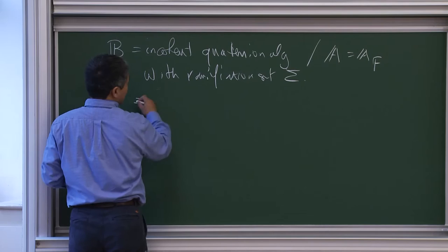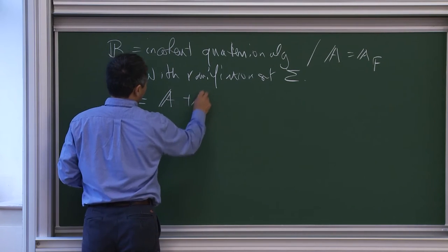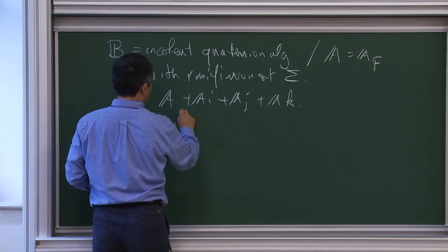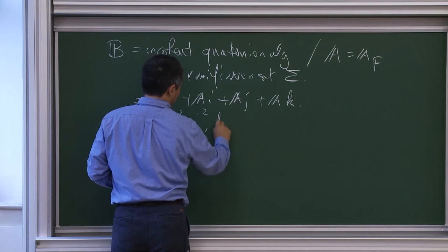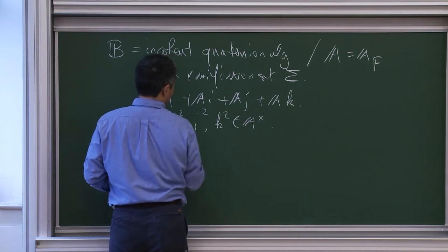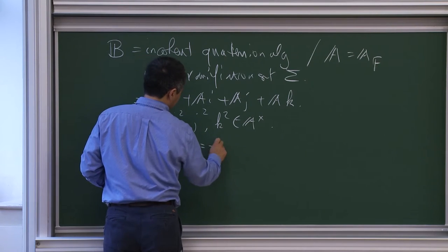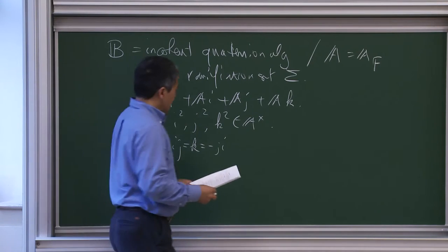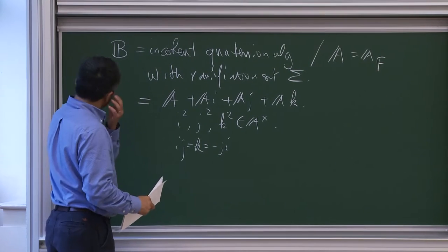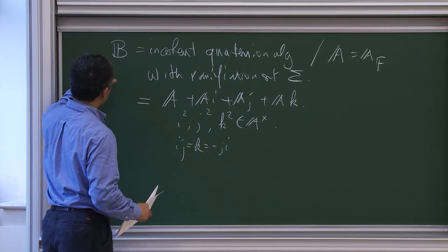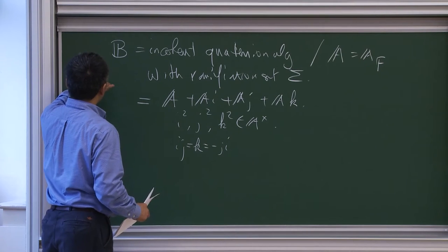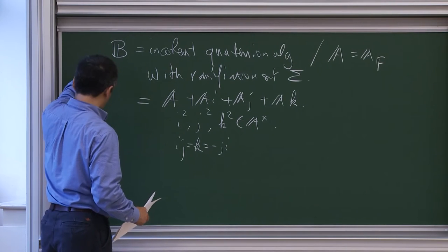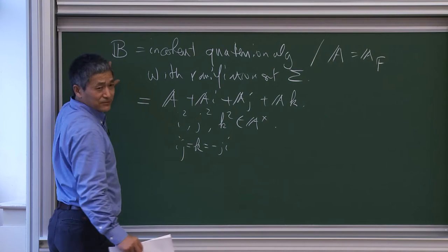Concretely, you can write this as A plus Ai plus Aj plus Ak, as usual, where i², j², k² are in A cross and ij = k = -ji. That's a typical quaternion algebra. This quaternion algebra is used when we formulate the Gross-Zagier formula, and it's very convenient because we can view it as an orthogonal Shimura variety.